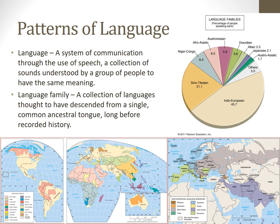Hello Human Geographers, we are back at it again this evening. Tonight we're going to be looking at cultural patterns and their effects. We'll begin by looking at patterns associated with language. Language is a system of communication through the use of speech — a collection of sounds understood by a group of people to have the same meaning.